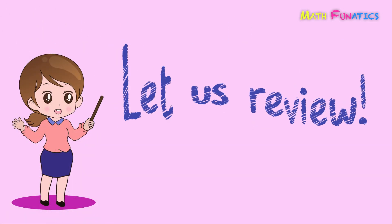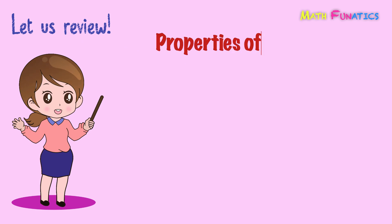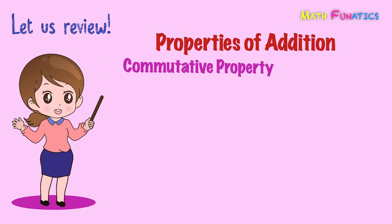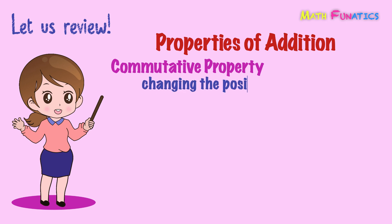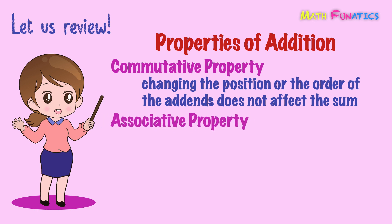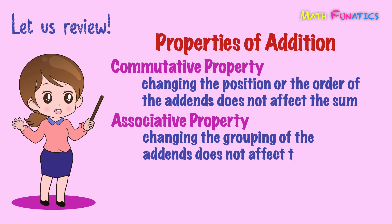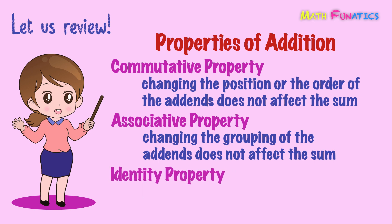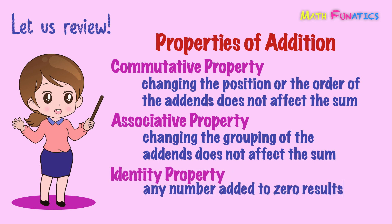Good job, students! Now let's make a recap of what you've learned today. There are three properties of addition. First, commutative property states that changing the position or order of the addends does not affect the sum. Second, associative property states that changing the grouping of the addends does not affect the sum. Third, identity property states that any number added to 0 results in the number itself.